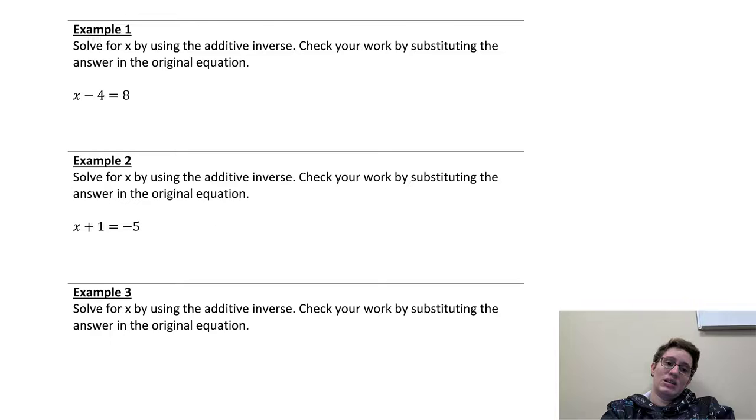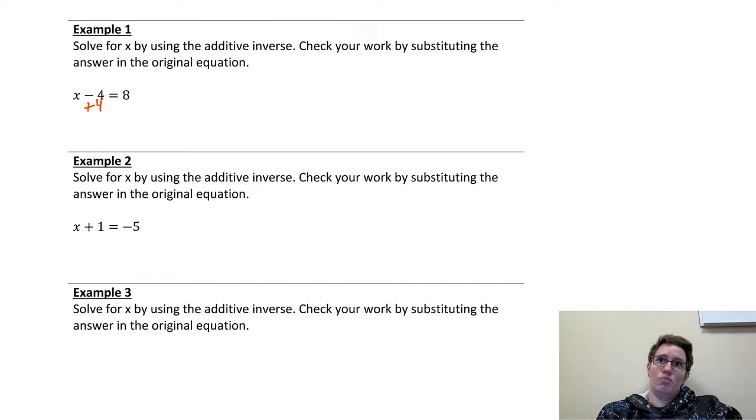If I have x minus 4 equals 8, I can think about the answer. Or, like the problem says, I can use the additive inverse. So, what I would do is say, I don't like that this negative 4 is right here, so I want it to go away. And the way I make it go away is I use the opposite sign. So, instead of a minus 4, I'm going to add 4.